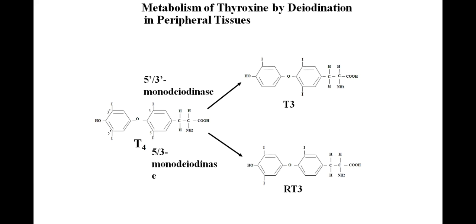In terms of activity, T3 is active with a ratio of 10 to 1 compared to T4. Whenever any action of thyroid hormone is required, T4 will be converted into T3 in the periphery by the action of 5'3' monodeiodinase.